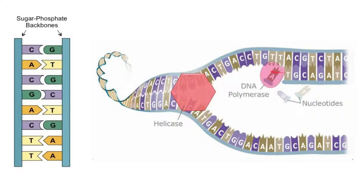DNA polymerase then forms new phosphodiester covalent bonds between these free-floating nucleotides, building a new DNA polymer — that is where the name comes from. A common misconception is that DNA polymerase forms the hydrogen bonds between complementary bases — it does not. No enzyme is needed for that; it occurs by chance when the free-floating nucleotides diffuse in. DNA polymerase is responsible only for forming the covalent phosphodiester bonds between the new nucleotides.